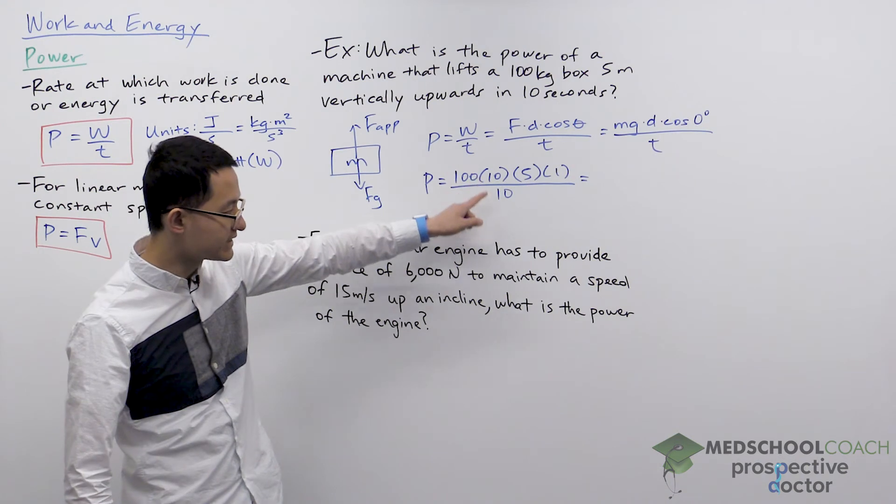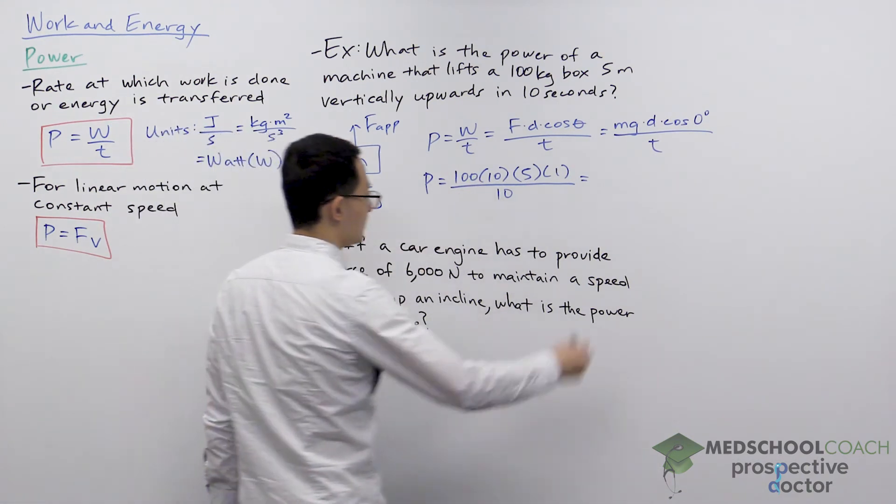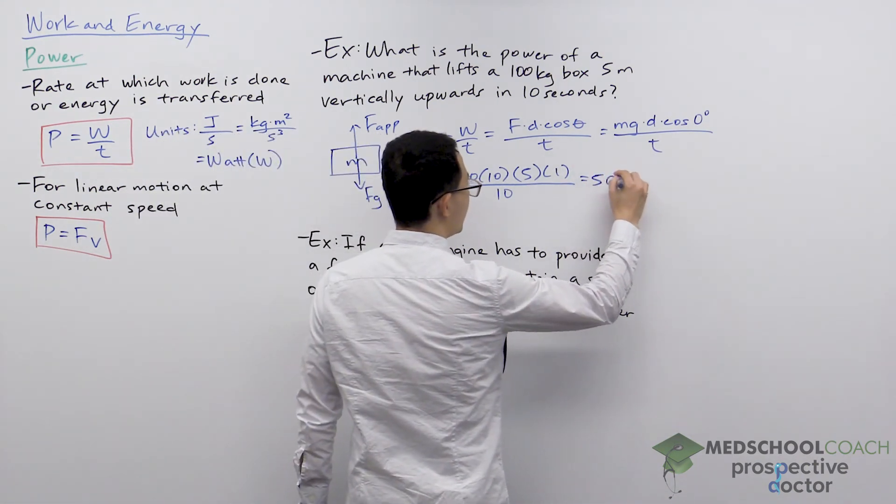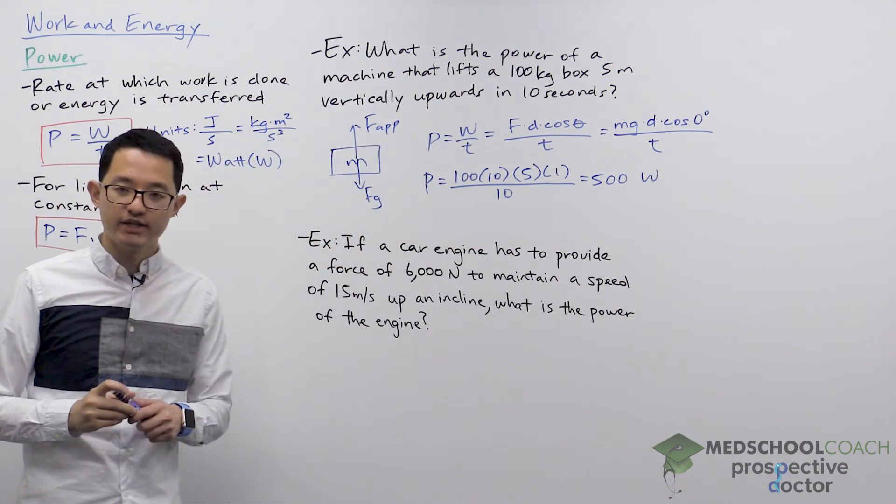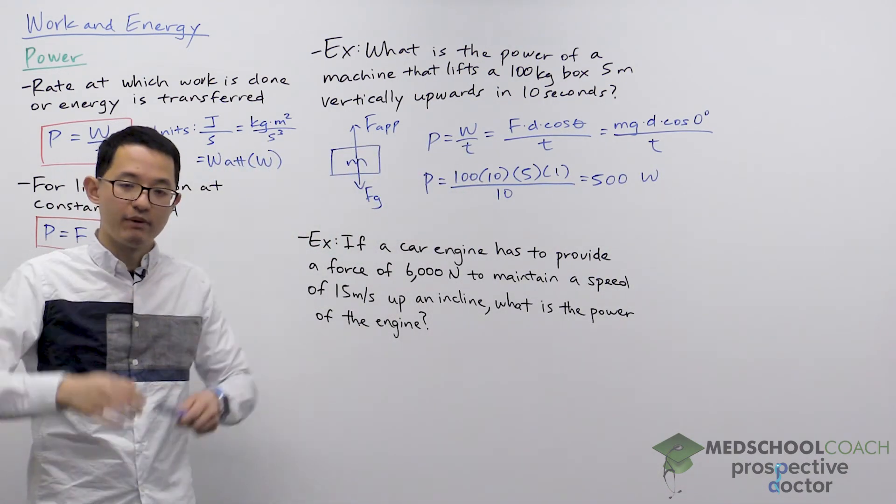So conveniently, the tens cancel out. So this is going to leave us with 500 watts. That must be the power of the machine while it is lifting the box up.